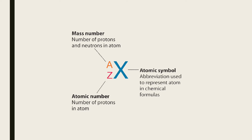Before we get into our lesson today, we must first recap some information that we will need later on. We need to know how to read the atomic symbol. The atomic symbol X is an abbreviation used to represent an atom in chemical formulas. A is the mass number, representing the number of protons and neutrons in an atom. Z is the atomic number, representing the number of protons in an atom.